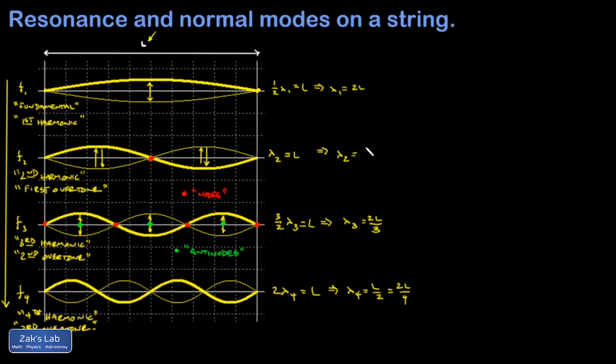Instead of saying lambda two is L, I'm going to say lambda two is two L over two. And now I see the pattern lambda one is two L over one. That denominator is just equal to the index of the wavelength that I'm looking at. So for my nth harmonic, I have lambda n equals two L over n.